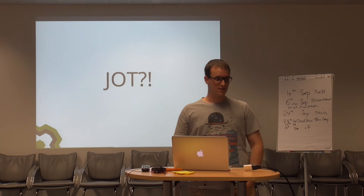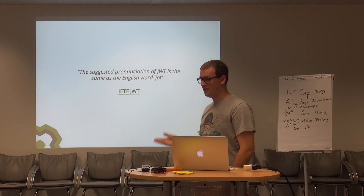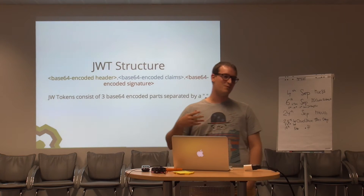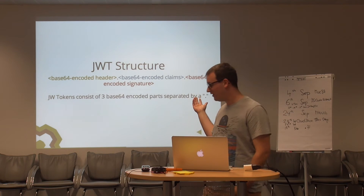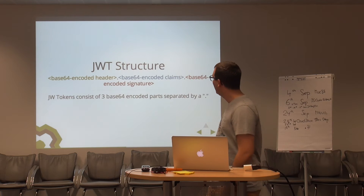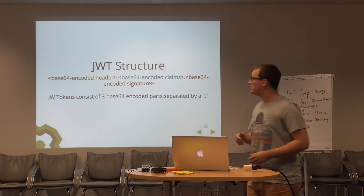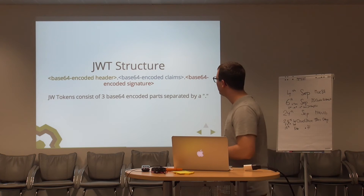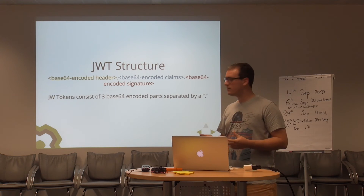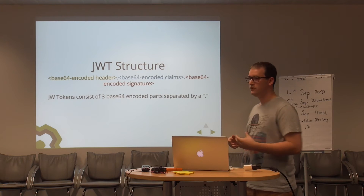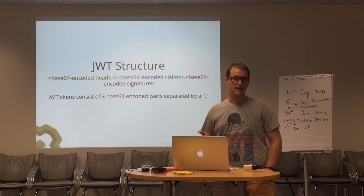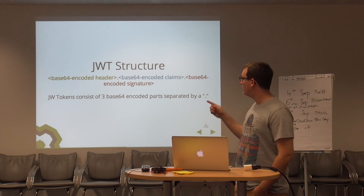Why call it Jot? It's basically because they suggested in the standard to call it Jot. There's another standard called JWE and I was thinking about calling it Joey, but it sounds just really stupid. The structure of a JWT token consists of three parts: a header, a part containing the claims — the real payload data of the token — and a signature which is usually a HMAC signature. They are all base64 encoded and separated by a dot.